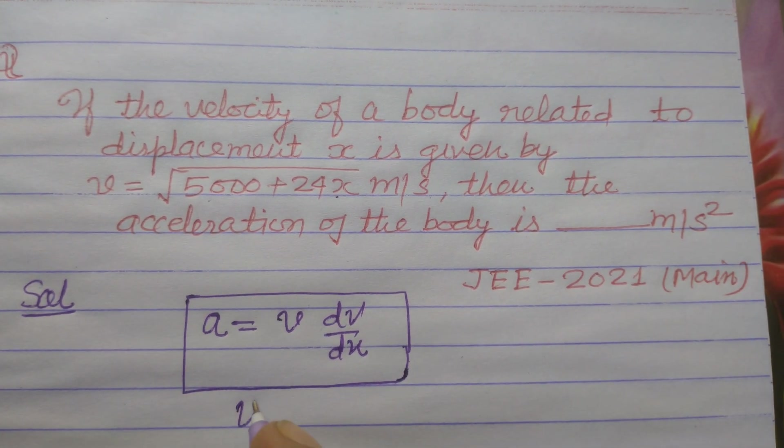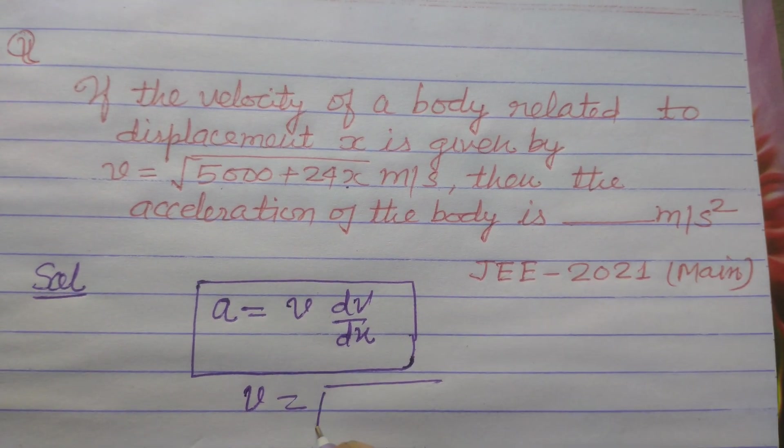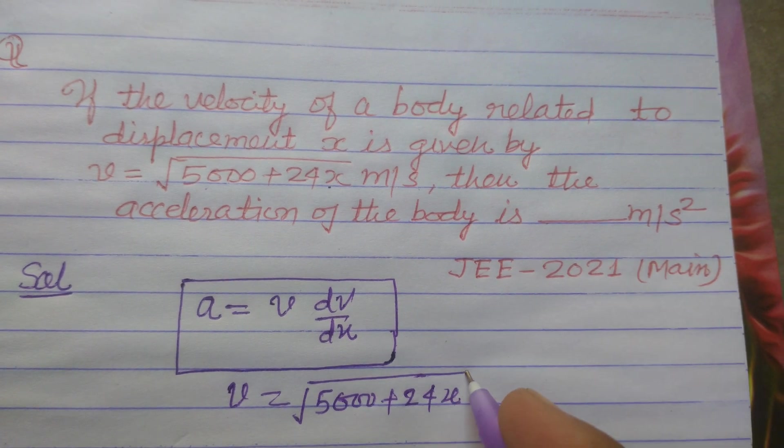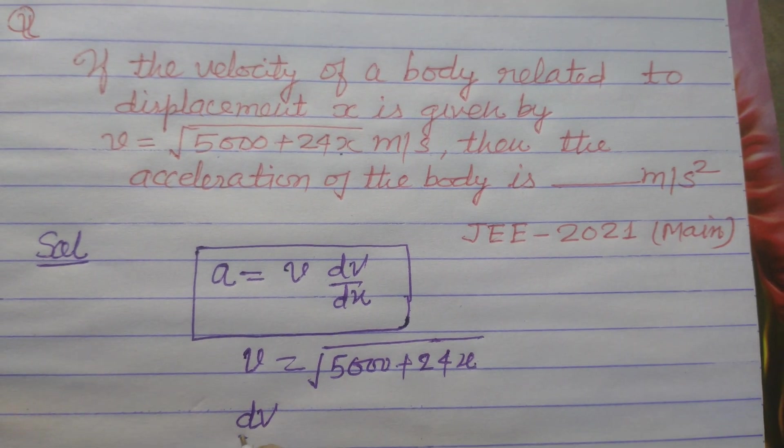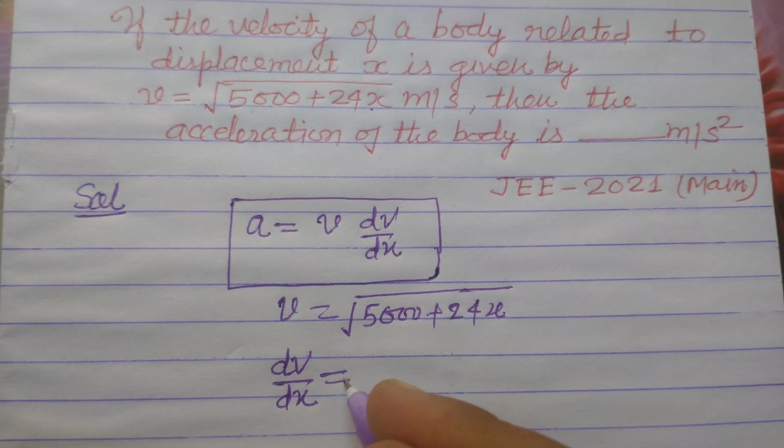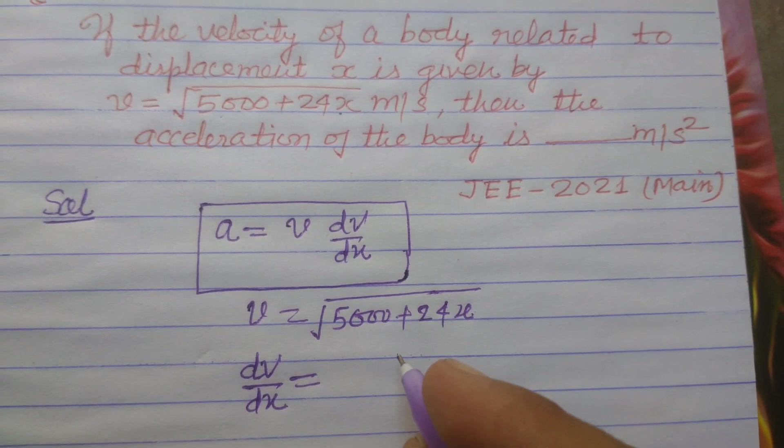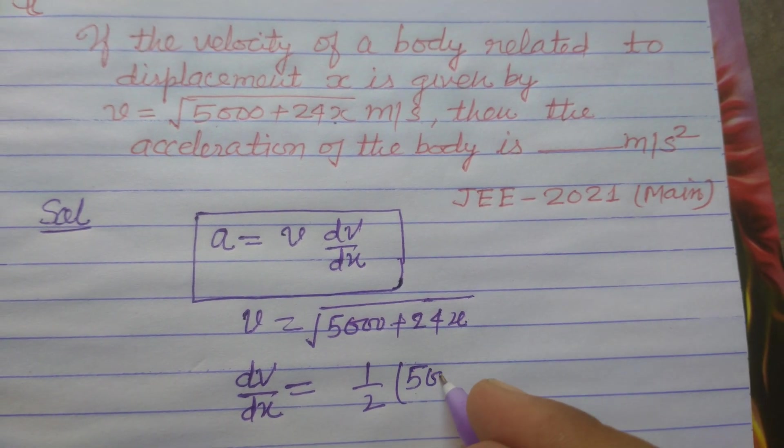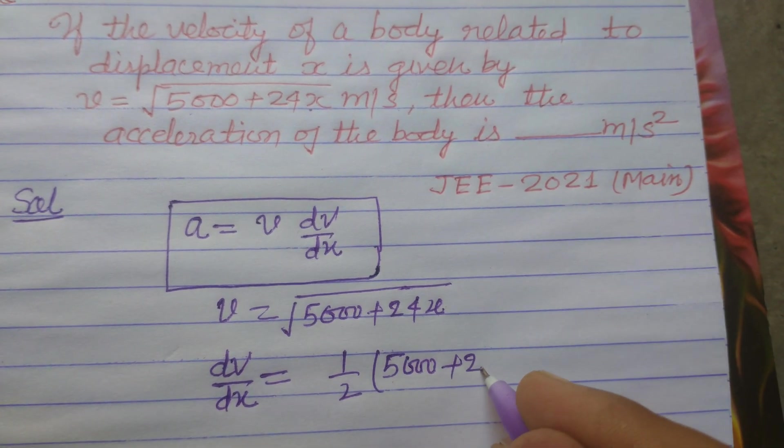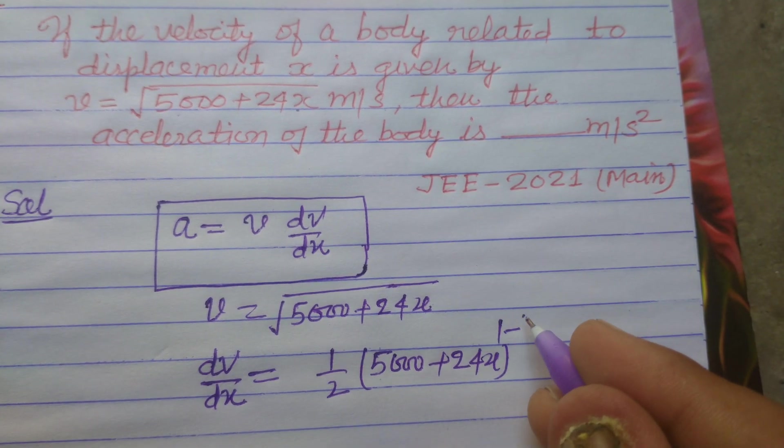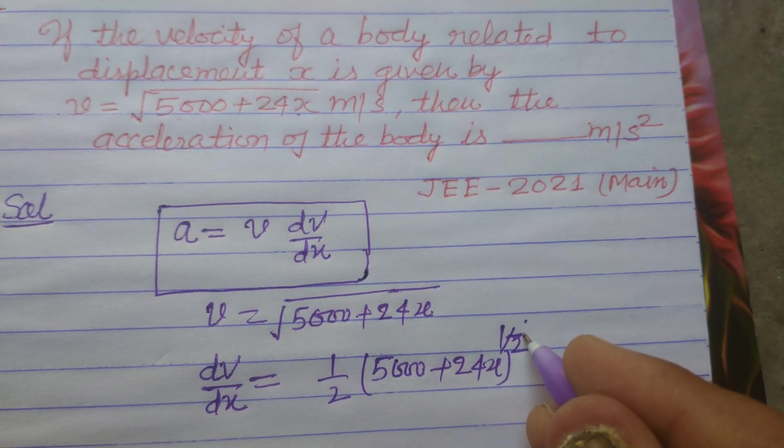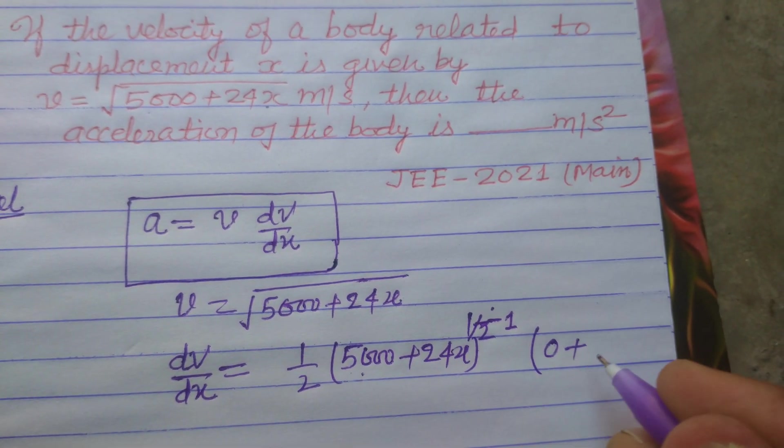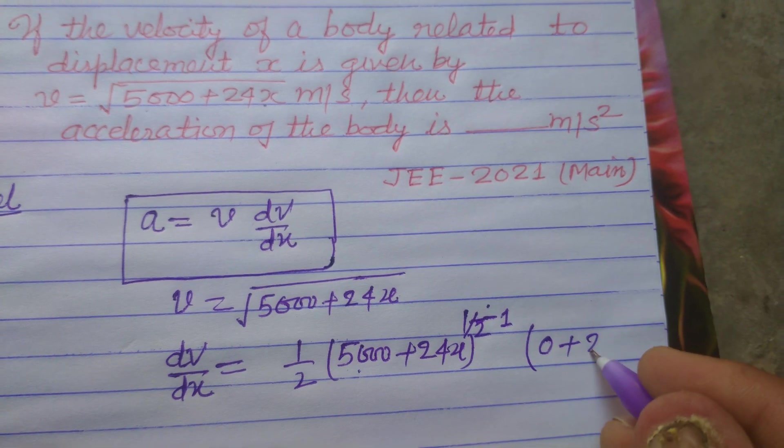So v is given to us as √(5000 + 24x). Now, differentiating this with respect to x: dV/dx = 1/2 × (5000 + 24x)^(1/2 - 1) × (derivative of inside). 5000 is constant, so it's 0. For 24x, this is 24.